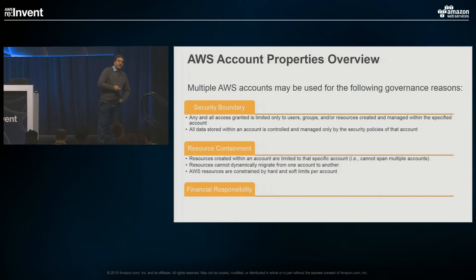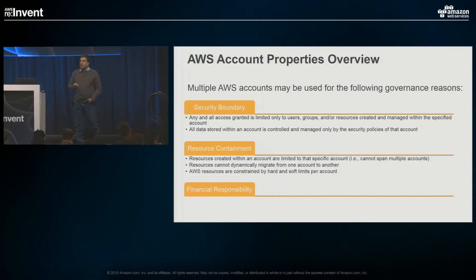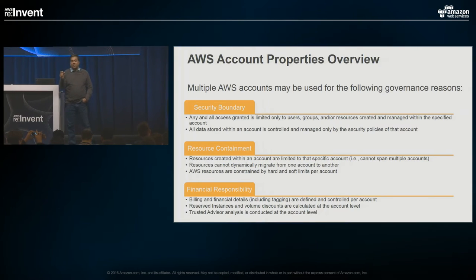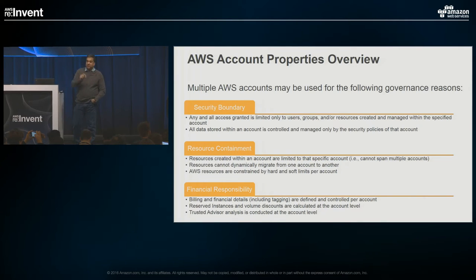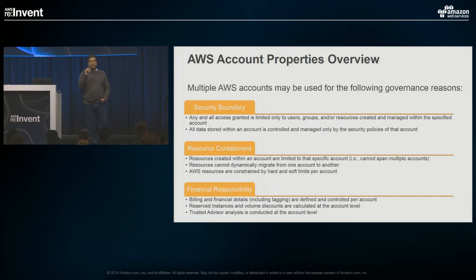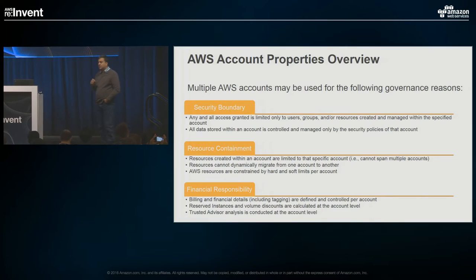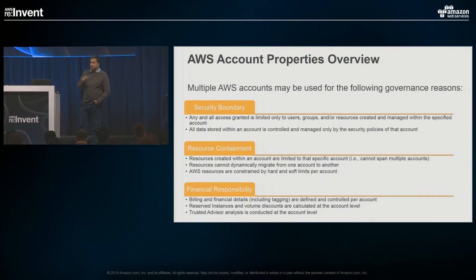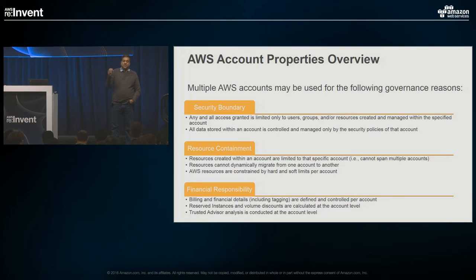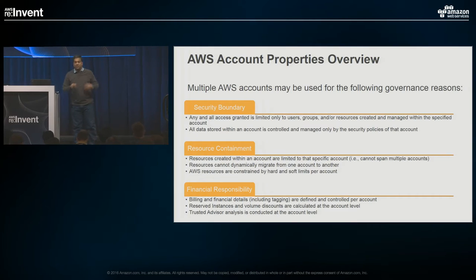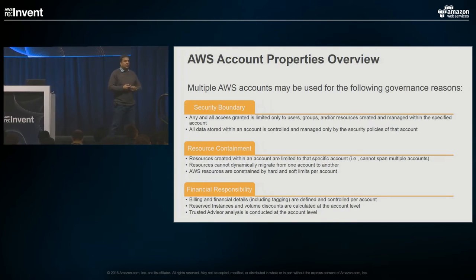Third is financial responsibility. An AWS account is the billing point for all resources within it. When you create a resource, all billing data goes into the account. Discounting mechanisms such as Reserved Instances and spot pricing apply to resources within the account. Tools like Trusted Advisor apply to that one account's services. So from a financial perspective, that's another dimension to consider when creating your pattern — putting all these requirements together for what you need to do for your business.